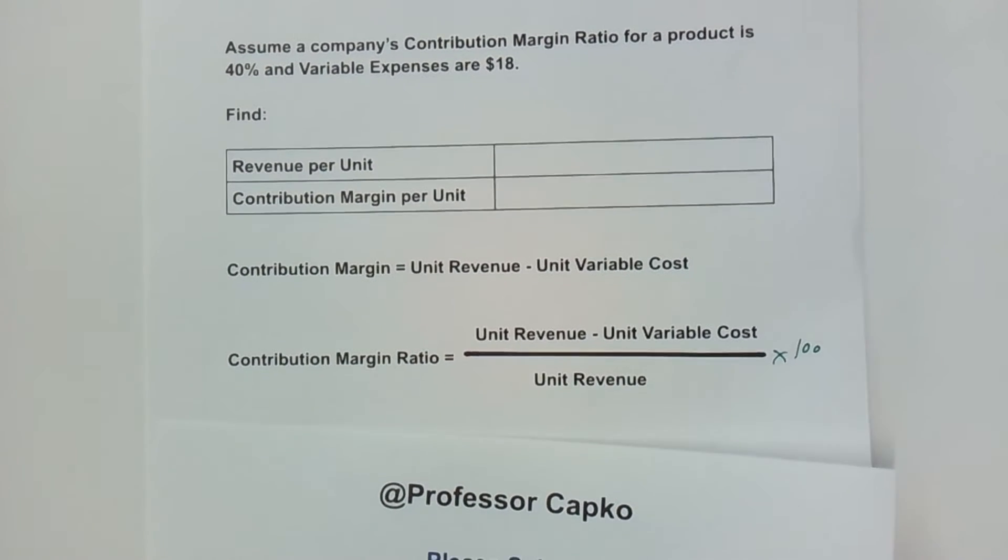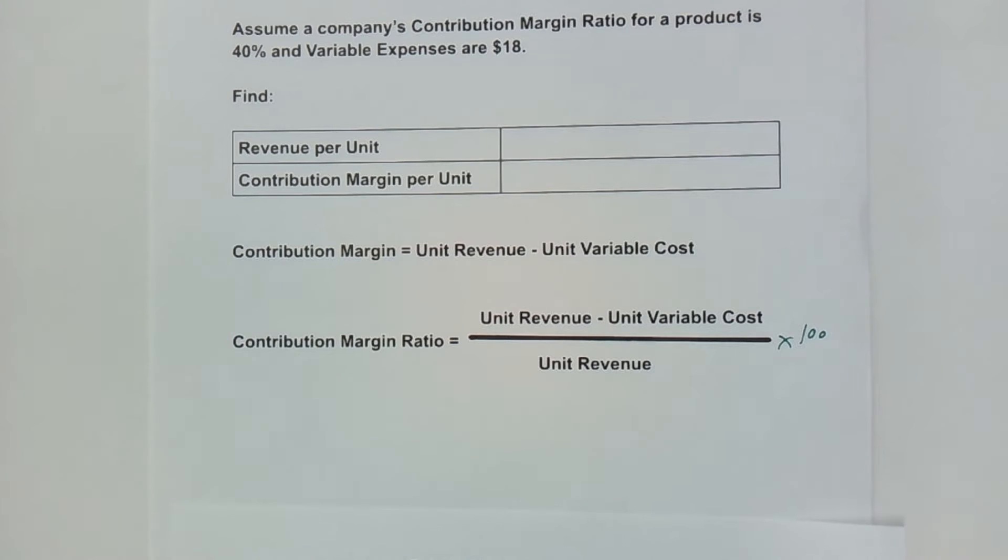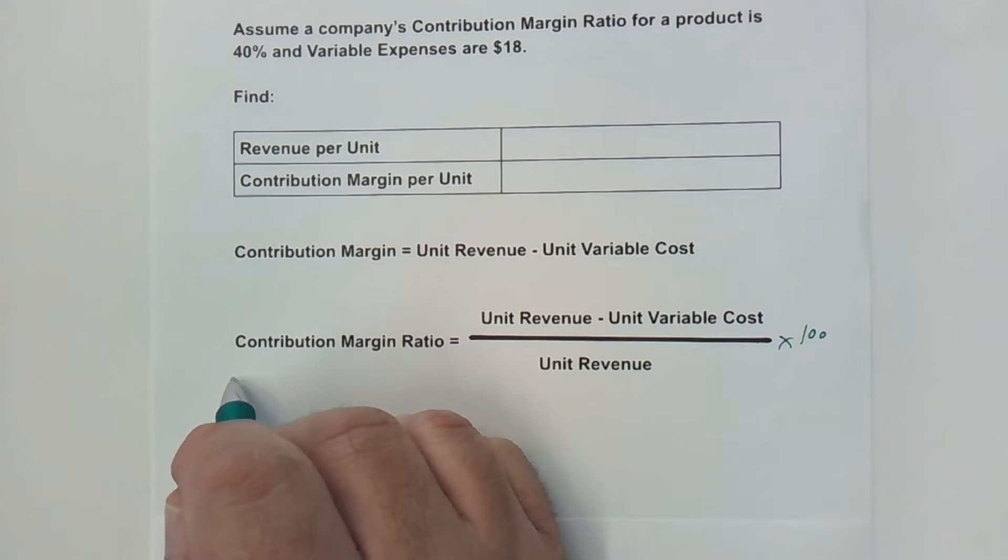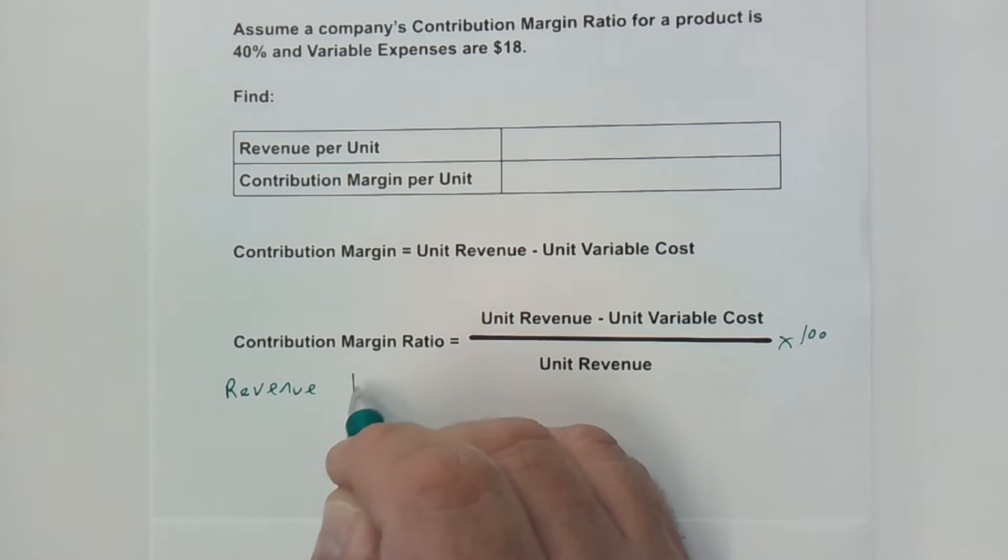Let's assume that the revenue, that's the amount that you're receiving per unit, we're going to set that equal to 100%. Whatever revenue is, that's 100%. That's the starting spot.